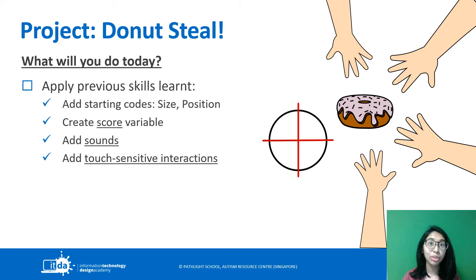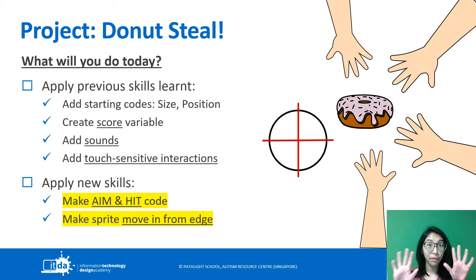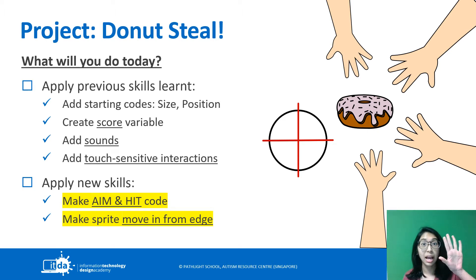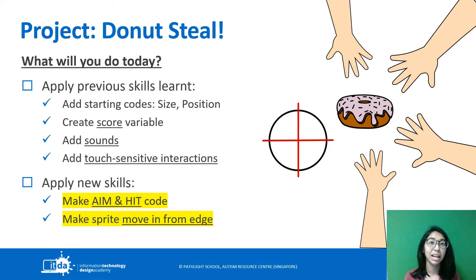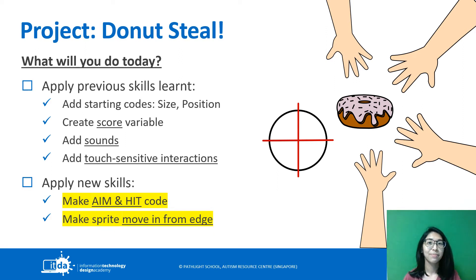We'll add sounds as well as touch sensitive actions — so if something touches something, it's going to result in a different action. Some new things we're going to learn today: how to make an aim and a hit code. For this, you will need to use both hands on your keyboard — one hand to control the mouse, the other hand to shoot at things. You're also going to make sprites move in from the edge of your game, so all the hand sprites will come in from different edges.